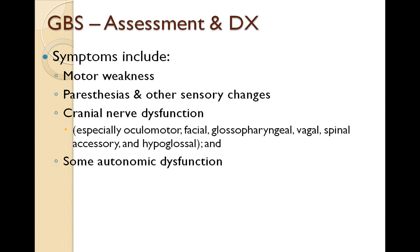Symptoms include motor weakness, ascending or descending weakness or paralysis, paresthesias, and other sensory changes. The person will have cranial nerve dysfunction — oculomotor, facial, vagal, spinal accessory, and hypoglossal nerves can all be affected. The person will also have autonomic dysfunction, including problems with blood pressure — usually hypotension — cardiac dysrhythmias, and possibly a paralytic ileus as the GI tract slows down, along with urinary retention.